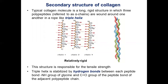A typical collagen molecule is a long, rigid structure in which three polypeptide chains, referred to as alpha chains, are wound around one another in a rope-like triple helix. This structure is responsible for the tensile strength of collagen.